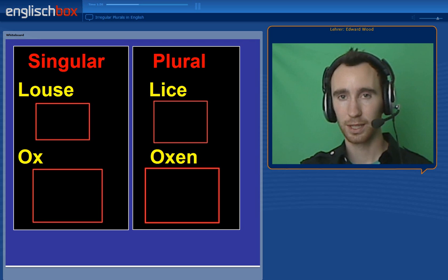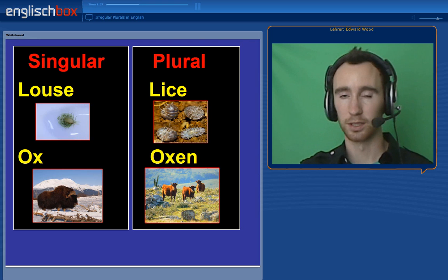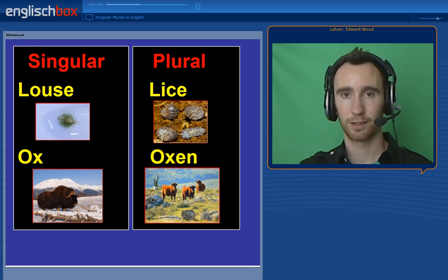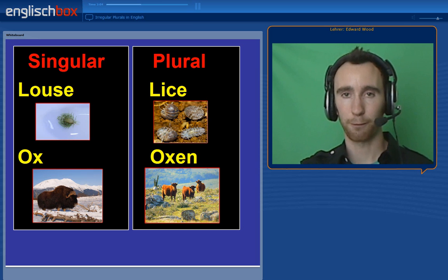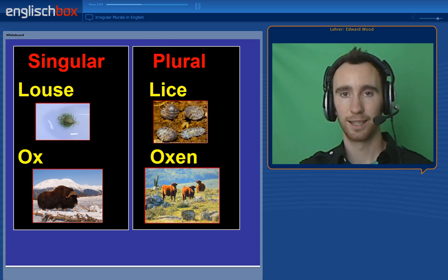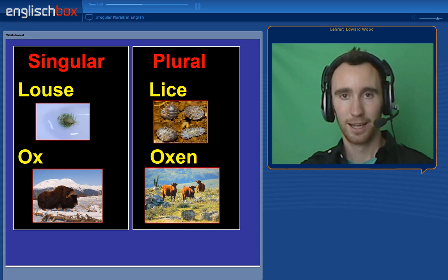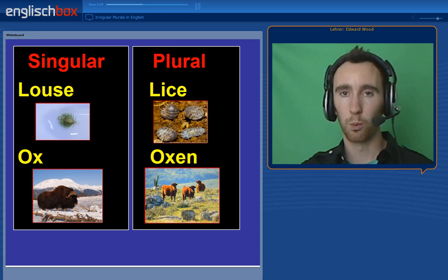Similarly, for those nasty little animals — a louse — and many lice. You can have different types of lice: hair lice that live in your hair, and wood lice.